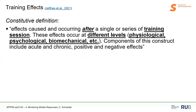We start with the basic definition: what are training effects? How do Jefferies and colleagues define this? The constitutive definition is that everything that happens after a training session or after exercise, and we have different levels where training effects could occur — for example, physiological, psychological, biomechanical, and so on. This is also relevant for everything we talk about in recovery, because recovery can happen when there's absence of training and also when there's active interventions. We're looking at things that happen after the training or recovery intervention, and we can differentiate on different levels of this construct.